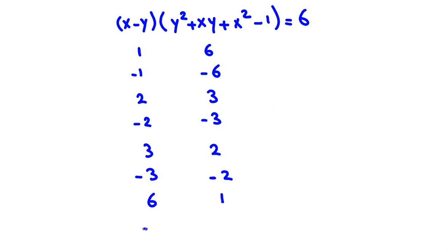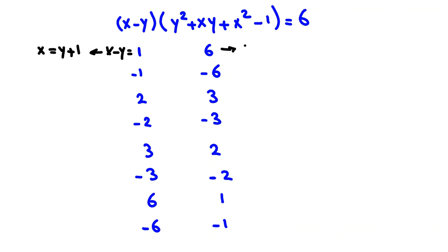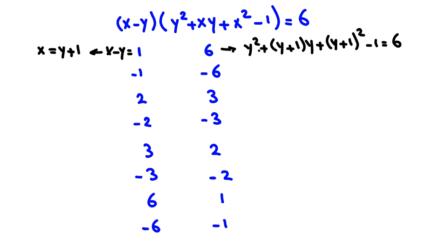For x minus y equal to 1, x equals y plus 1. Replacing x with y plus 1 in y squared plus xy plus x squared minus 1 equals 6: y squared plus (y plus 1)·y plus (y plus 1) squared minus 1 equals 6.